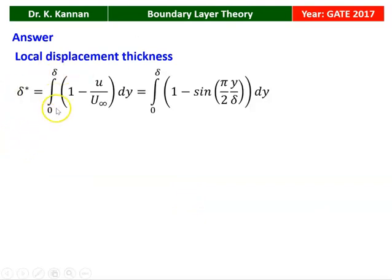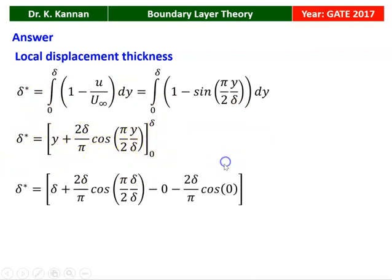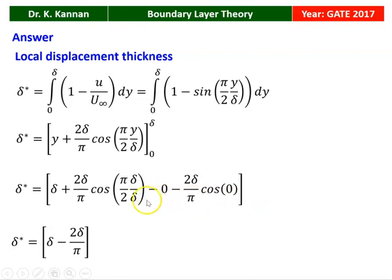The local displacement thickness delta* equals the integral from 0 to delta of (1 − U/U∞) dy, which equals the integral of (1 − sin(pi·y / 2·delta)) dy. Integrating: delta* equals [y + (2·delta/pi)·cos(pi·y / 2·delta)] from 0 to delta. Substituting limits: delta* equals delta + (2·delta/pi)·cos(pi/2) minus (2·delta/pi)·cos(0). Since cos(90°) = 0 and cos(0) = 1, this becomes delta* equals delta − 2·delta/pi. Therefore delta*/delta equals 1 minus 2/pi, which is the answer.